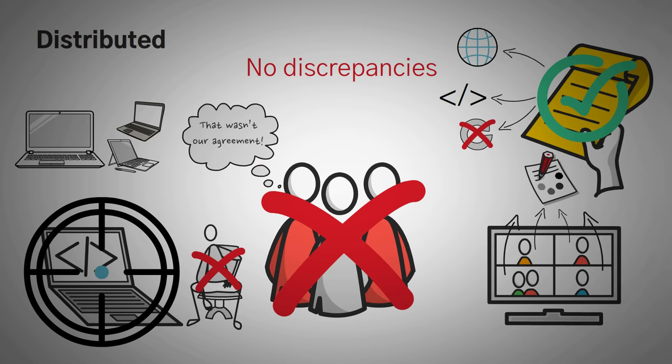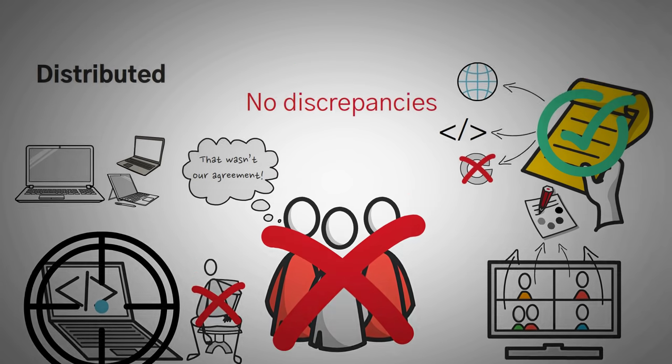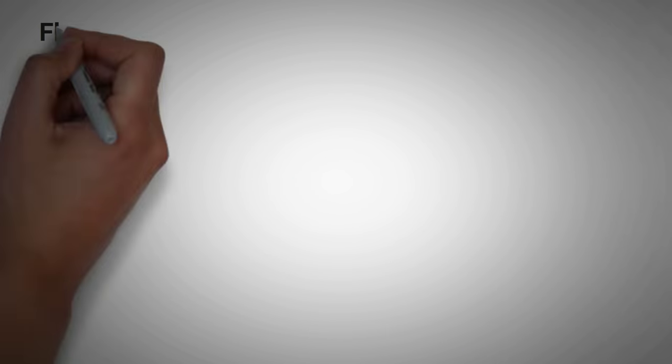So now we have financial agreements that nobody can argue. Because they are code, they don't change, and everybody has access to them. Now, you might not understand what the power of technology like this is, but to help you get the hang of it, let's go over some examples. Number one, a flash loan.